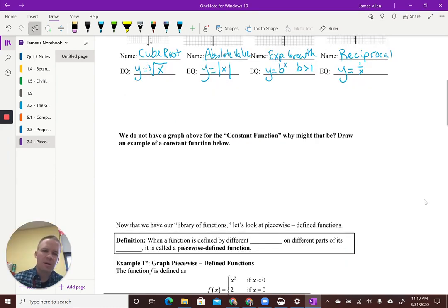So although we have a pretty robust library at this point in time, we actually have one graph that we left out. That is the constant function. Why might that be? Well, the reason why we did that is because there's really an infinite amount of constant functions. So we didn't want to give one particular graph and say, like, this is it. So let's go and do an example.